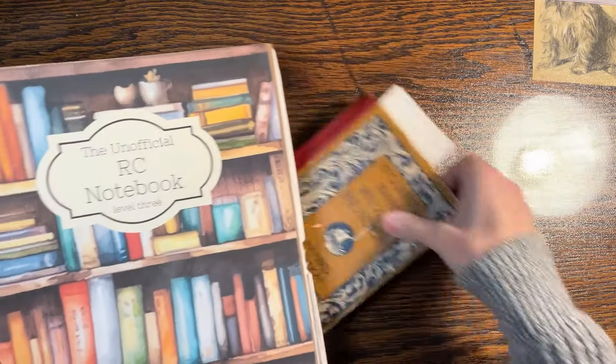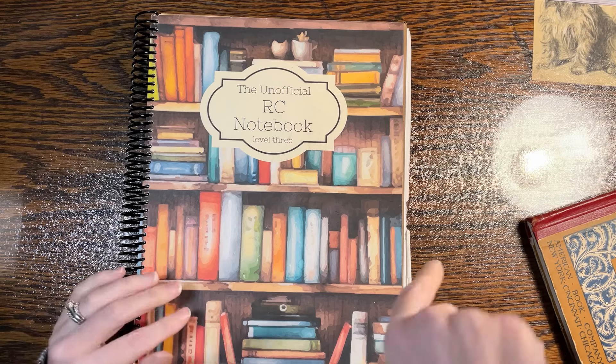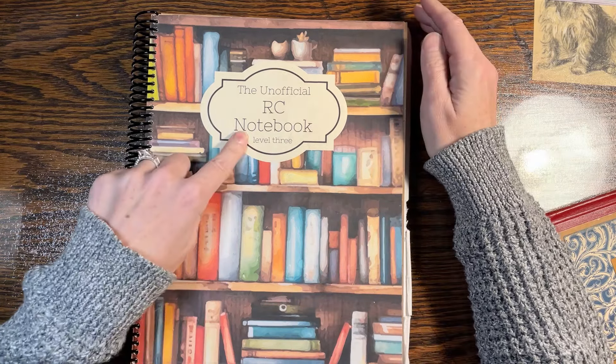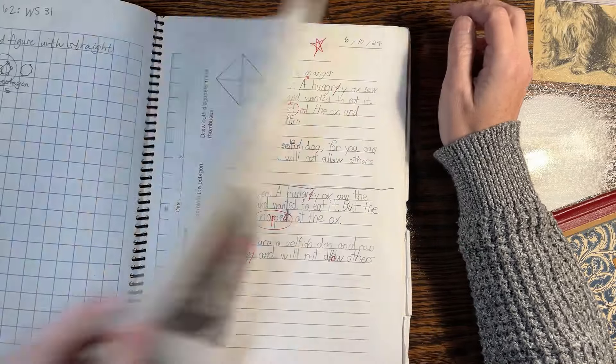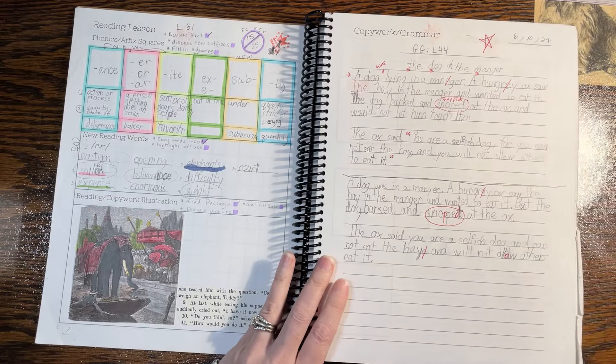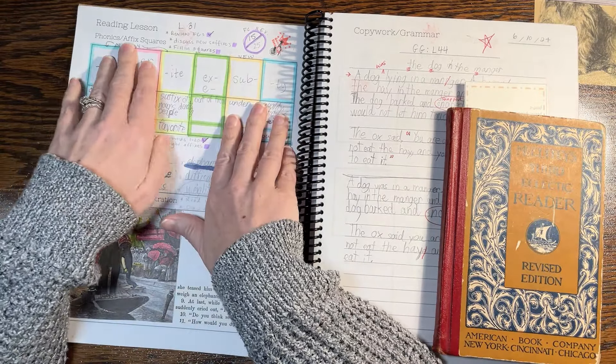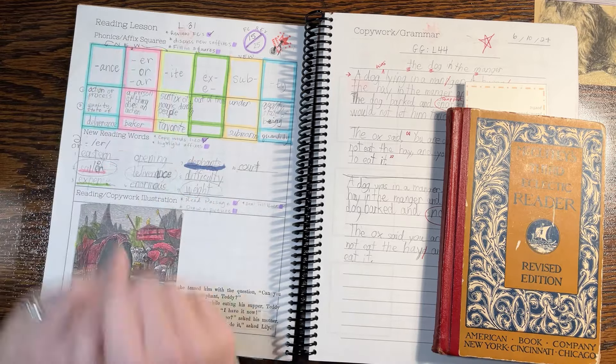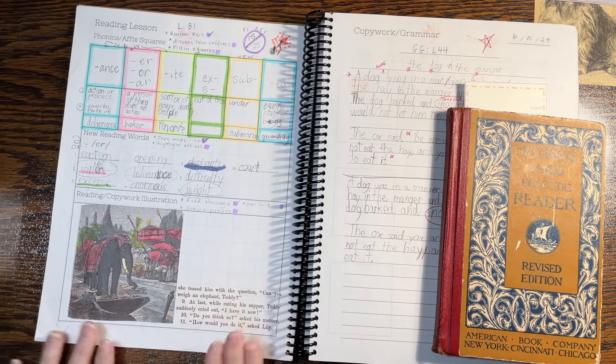So I guess I'm going to show you two different ways I have used resources to do language arts with the third McGuffey reader. Okay, so like all last year, all through third grade, and then up until just this last week, I have used the unofficial RC notebook level three.